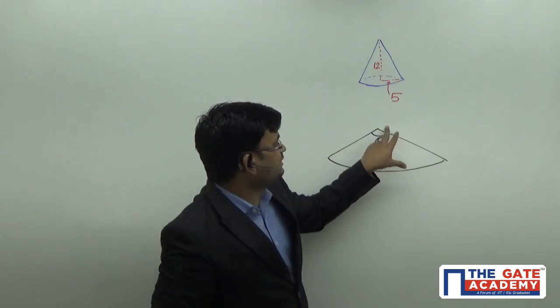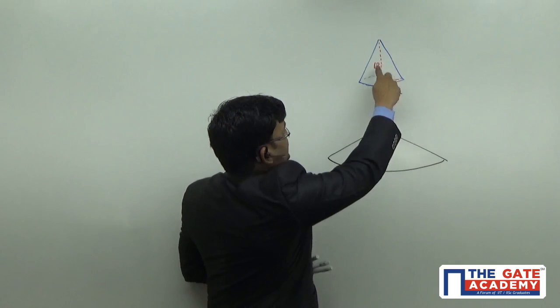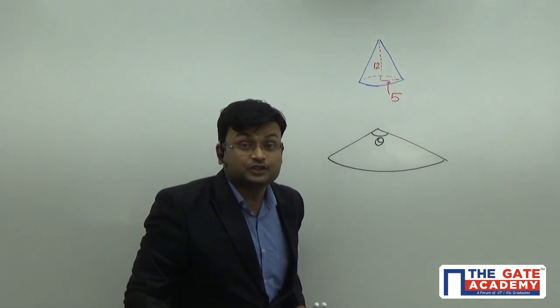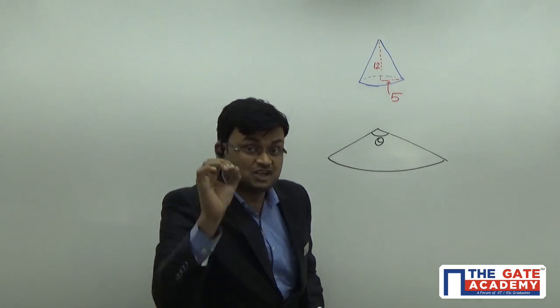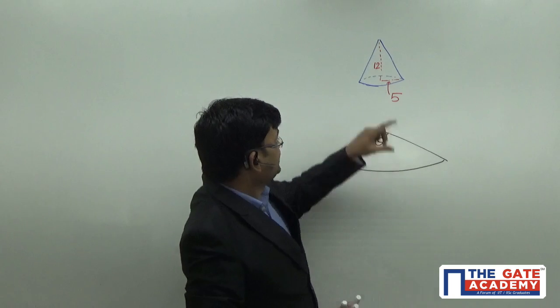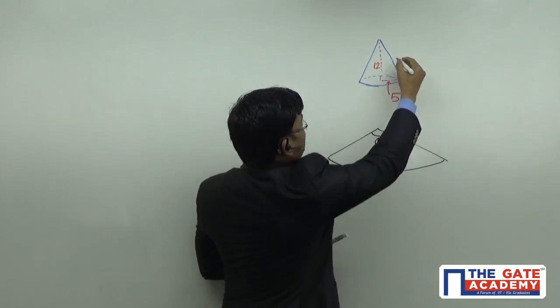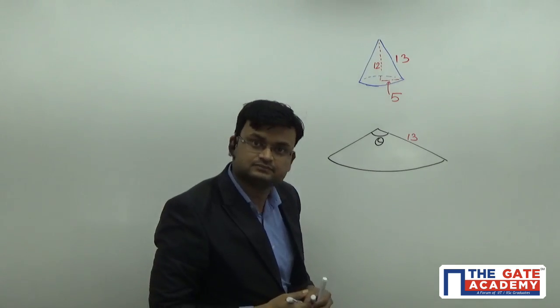Now, can anyone tell me what will be the radius here? It's very simple, because here the numbers are very beautifully given. They do not want you to recollect any formula, you have to apply logic here. And we will solve this question by logic. It is 12, it is 5. By using Pythagoras theorem, what will be this slant height? 13. Can I write this radius as 13? Very good.